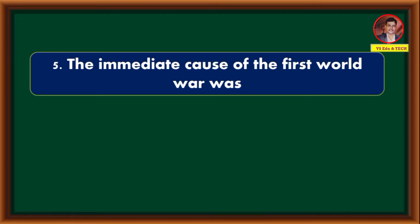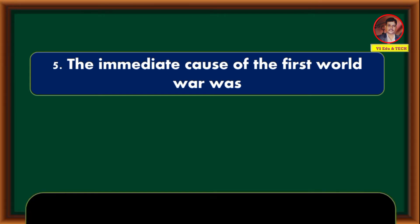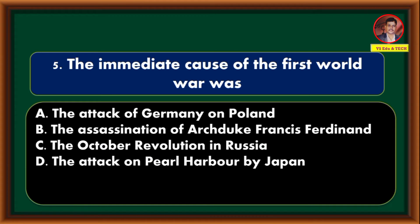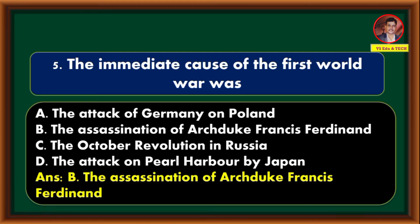The immediate cause of the First World War was — the attack of Germany on Poland; the assassination of Archduke Francis Ferdinand; the October Revolution in Russia; the attack on Pearl Harbor by Japan. Correct answer is option B: the assassination of Archduke Francis Ferdinand.